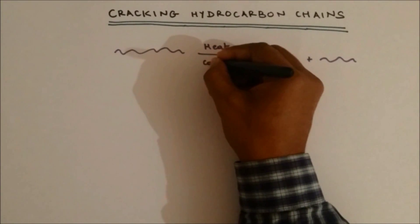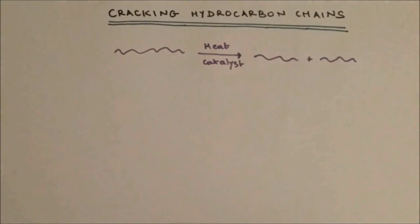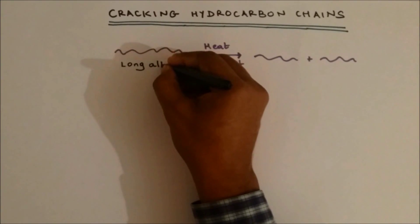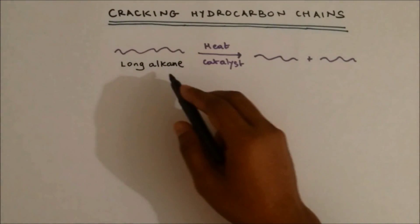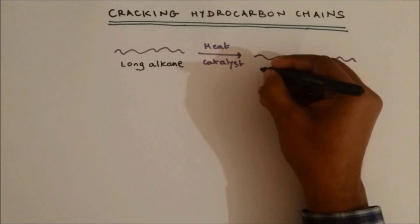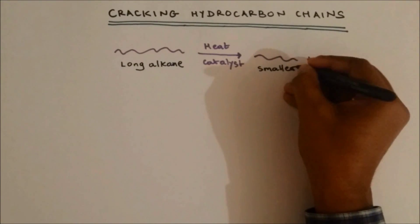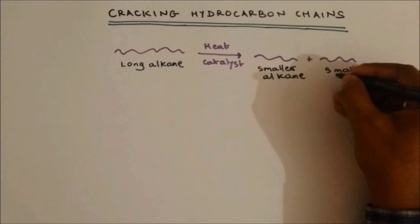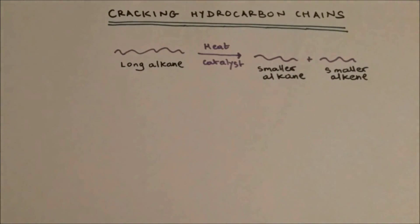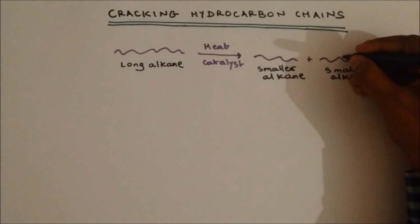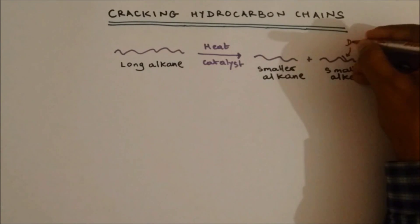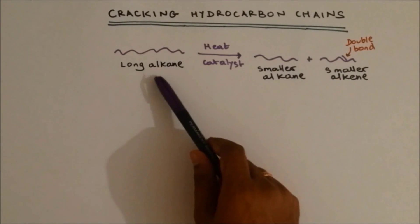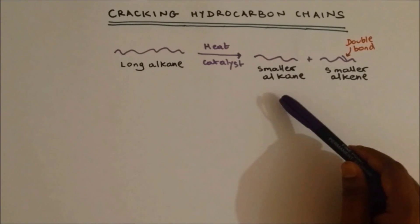Cracking uses heat and a catalyst. The long hydrocarbon chains which are being broken is an alkane. The long hydrocarbon chain is broken into smaller chains of alkane, so these are smaller alkane, but this chain is not an alkane — it's a smaller alkene. And obviously alkene has a double bond. So cracking means breaking long hydrocarbon chains into smaller ones, and the products are smaller alkane and smaller alkene.